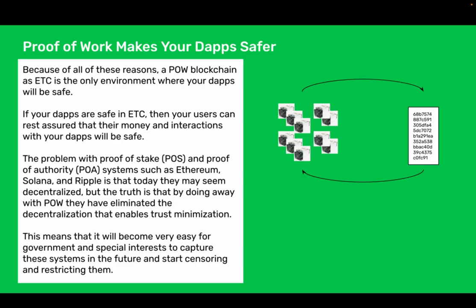Proof of work makes your dApps safer. Because of all these reasons, a proof of work blockchain like ETC is the only environment where your dApps will be safe. If your dApps are safe in ETC then your users can rest assured that their money and interactions with your dApps will be safe. The problem with proof of stake and proof of authority systems such as Ethereum, Solana, and Ripple is that today they may seem decentralized, but the truth is that by doing away with proof of work they have eliminated the decentralization that enables trust minimization. This means that it will become very easy for government and special interests to capture these systems in the future and start censoring and restricting them.